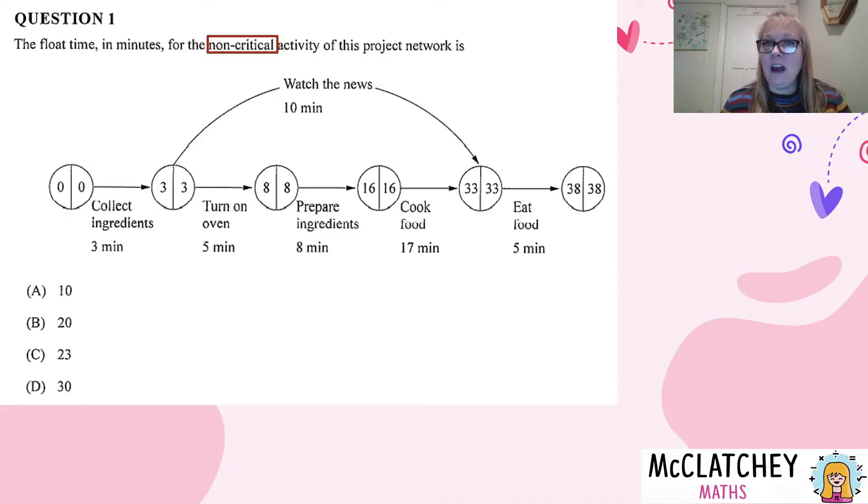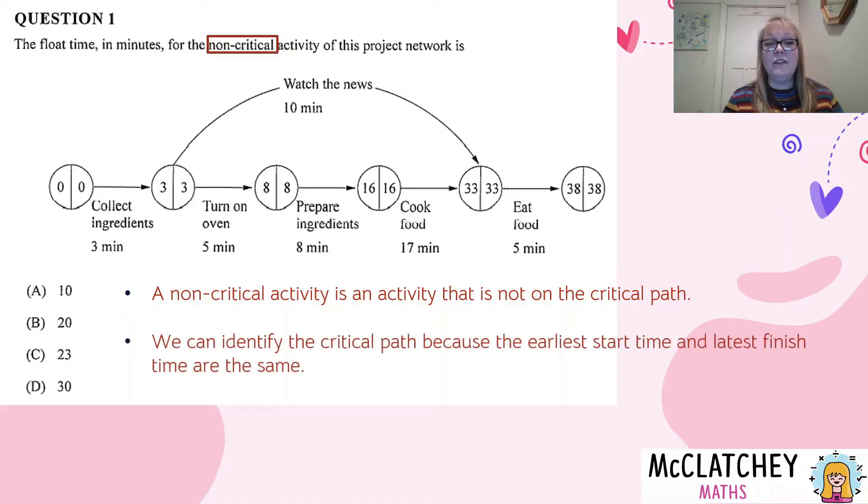You might be wondering, how on earth do you find a non-critical activity? Well, if you would remember, it's an activity that's not on our critical path. To find the critical path, we are looking where our earliest start time, which is the number in the left-hand side of our bubbles, is the same number as the number in the right-hand side of our bubbles, which is our latest finish time.